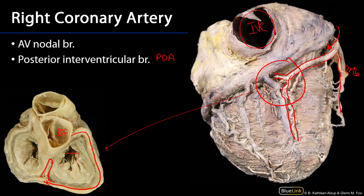Here is our tricuspid valve. That AV nodal branch is going to be found going to the AV node, which is at the nexus of the atrioventricular septum as well as the interatrial septum — approximately right about there. So these are the coronary arteries and their branches. Thank you very much for your time.